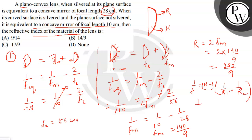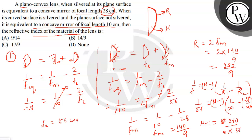For the plano-convex lens, f_L = 56 cm, R1 = infinity (plane surface), and R2 = −280/9 (curved surface, negative by sign convention). So: 1/56 = (mu − 1) × (0 − (−9/280)) = (mu − 1) × 9/280. Solving: mu − 1 = 280/(9 × 56) = 280/504 = 5/9. Therefore mu = 5/9 + 1 = 14/9. Option B is correct.